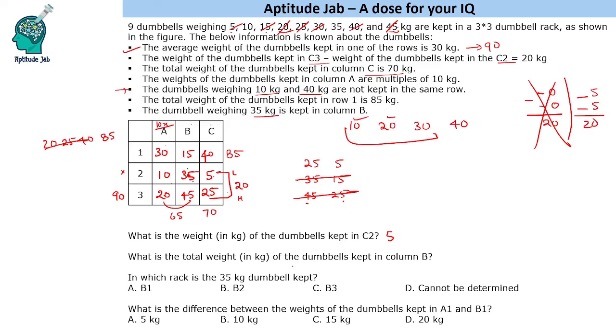What is the total weight of the dumbbells kept in column B? So column B is 50 plus 45, 95 kgs. In which rack is the 35 kg dumbbell kept? So 35 kg dumbbell is kept in B2.